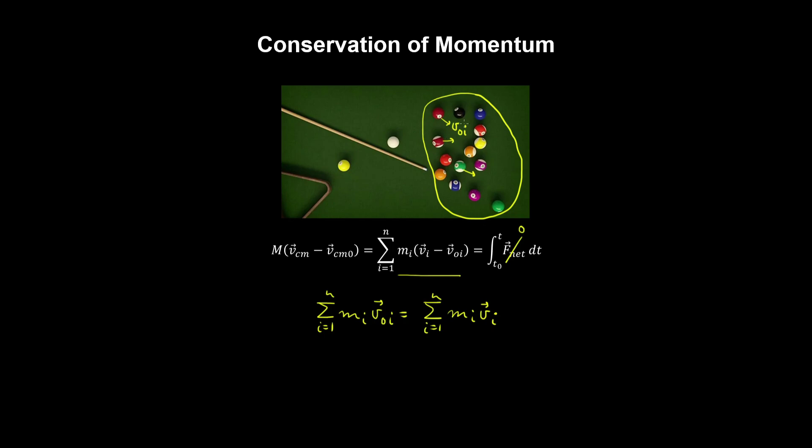After some time, these masses will have different velocities. And similarly, the momentum of the center of mass of the system is also conserved.